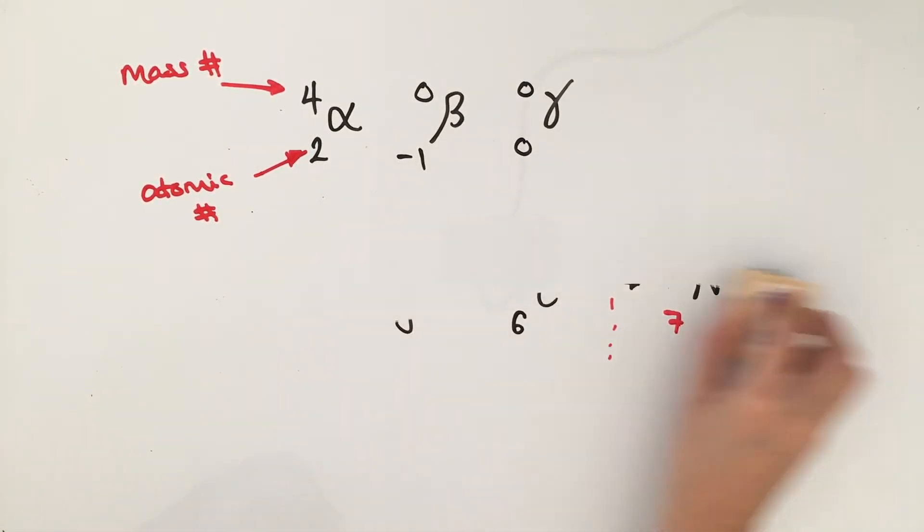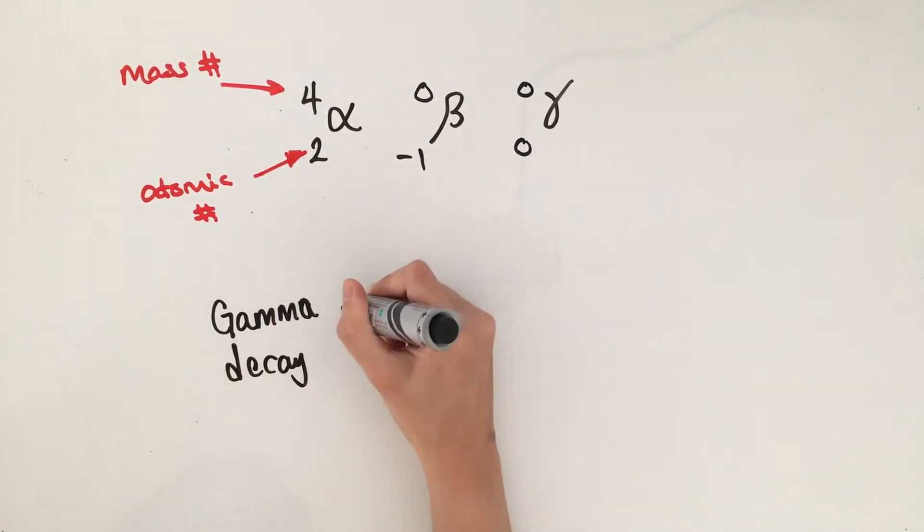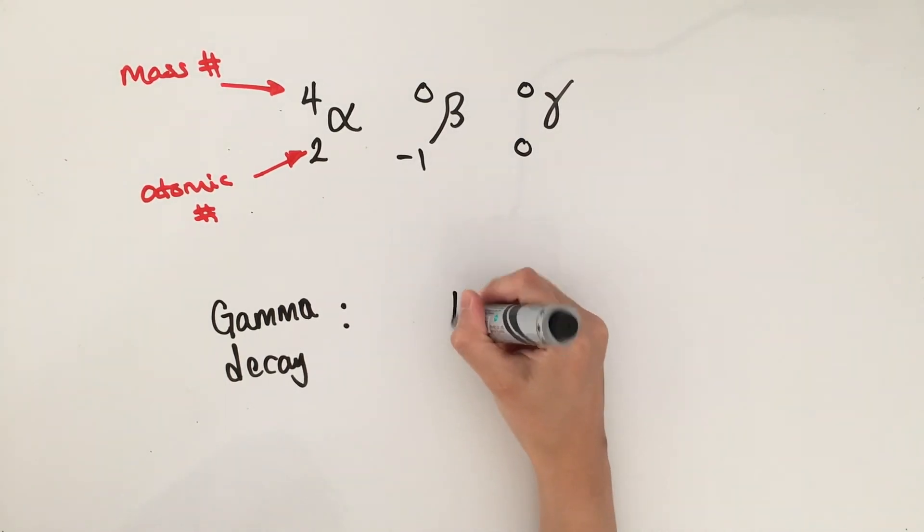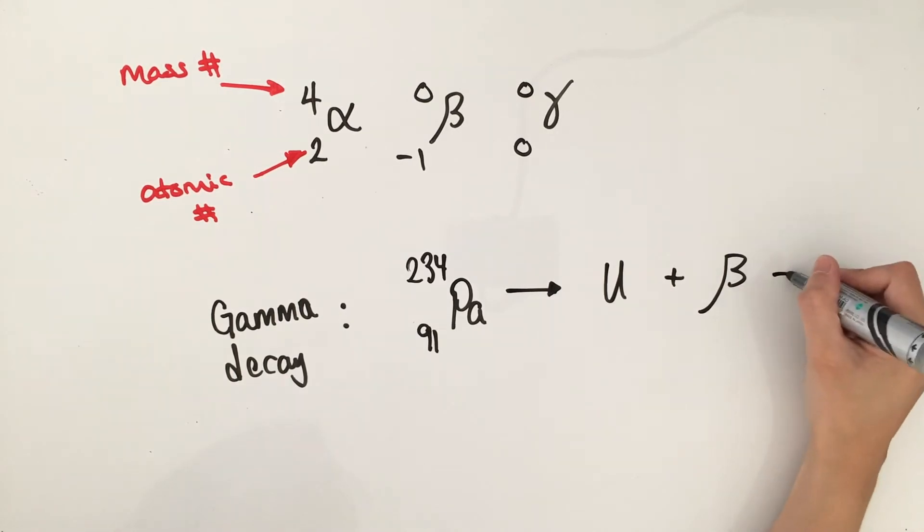And finally, we have gamma. Gamma decay usually happens following either an alpha or beta decay. So very often, you're going to see a lengthier decay equation because we need to add an alpha particle or a beta particle in the equation before gamma. Protactinium decays into uranium via beta decay and then gamma decay.